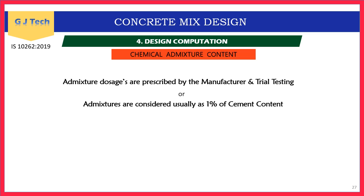Chemical admixture content: the percentage of chemical admixture to be used is prescribed by the manufacturer, who specifies the maximum dosage beyond which side effects like segregation and bleeding occur. For theoretical calculations or exam problems, admixtures are generally taken as 1% of cement content for standard concrete, up to 1.5% for high strength concrete, and around 0.5% for mass concrete.